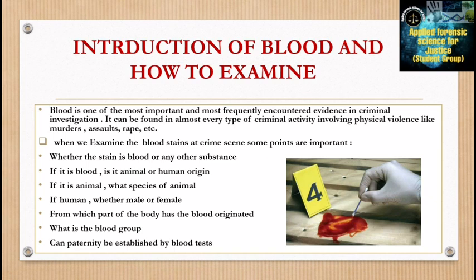Blood can be found in almost every type of criminal activity involving physical violence, like murder, assault, rape, etc. When examining blood stains at a crime scene, key questions are: whether the stain is blood or another substance; if it is blood, is it of animal or human origin; if animal, what species; if human, whether male or female; and from which part of the body has the blood originated.